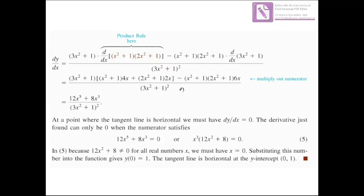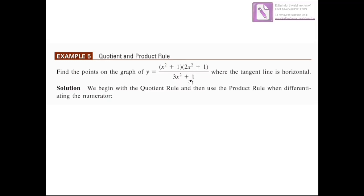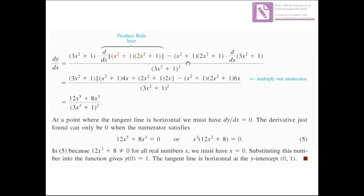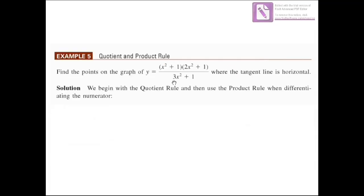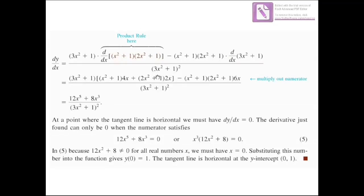We apply the product rule to differentiate (x² + 1)(2x² + 1): derivative of (2x² + 1) is 4x, times (x² + 1), plus derivative of (x² + 1) which is 2x, times (2x² + 1). Then subtract (x² + 1)(2x² + 1) times the derivative of (3x² + 1), which is 6x. All divided by (3x² + 1) squared.